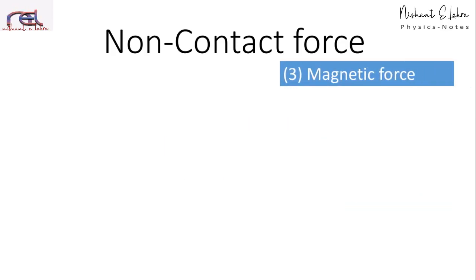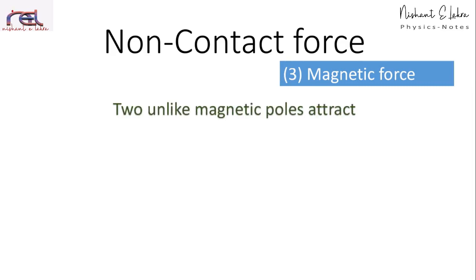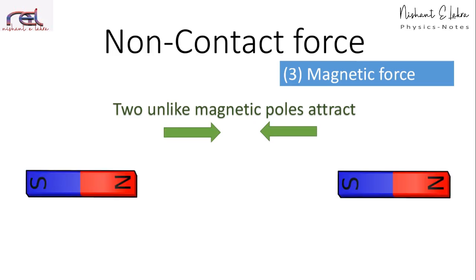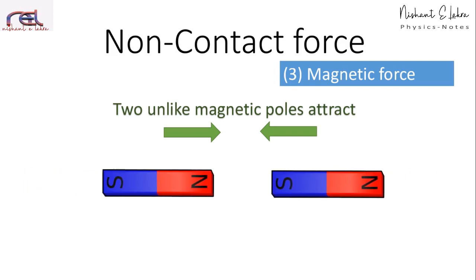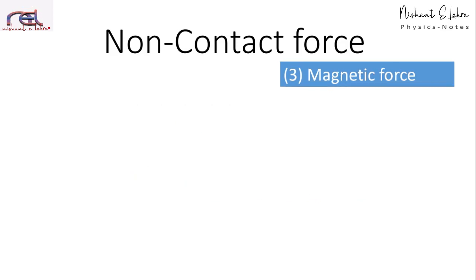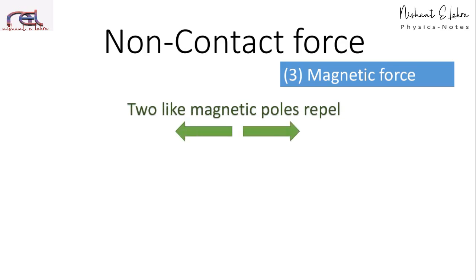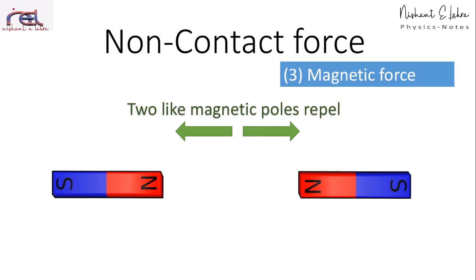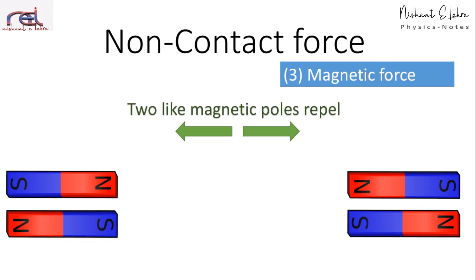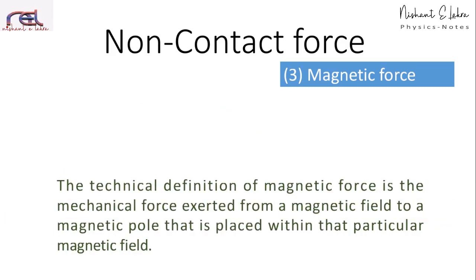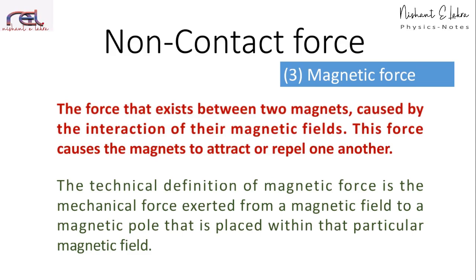The third non-contact force is magnetic force. Two unlike magnetic poles — north and south — will attract each other, while two like magnetic poles will repel. North pole and north pole repel, and south pole and south pole also repel. Technically, magnetic force is a mechanical force exerted from a magnetic field on a magnetic pole placed within that field. It is also the force that exists between two magnets caused by the interaction of their magnetic fields, causing them to either attract or repel.